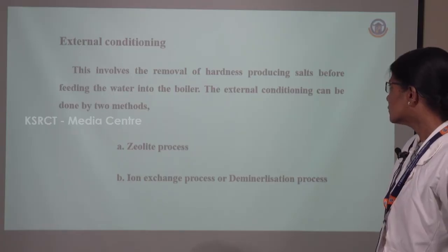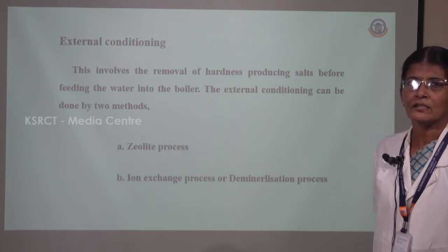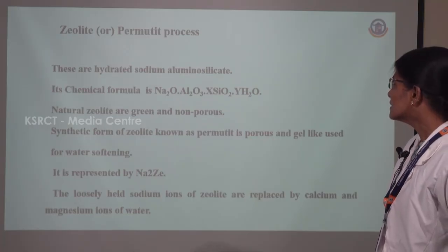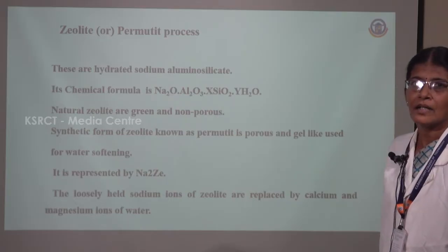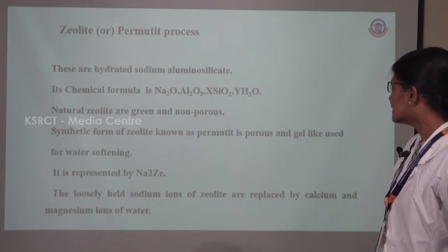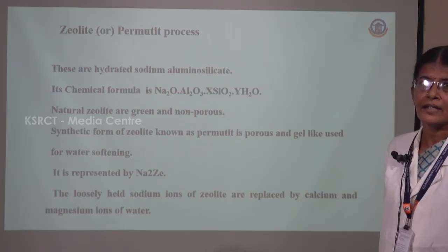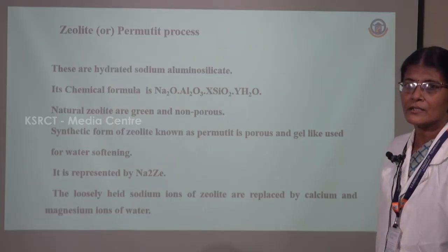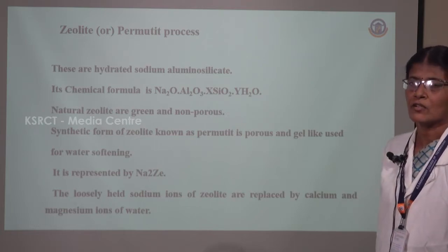External conditioning is usually done by two methods. The first method is the zeolite method. The second process is the ion exchange process, also called the demineralization process. Zeolite is hydrated sodium alumino silicate. Its chemical formula is Na₂O·Al₂O₃·xSiO₂·yH₂O. Natural zeolite is usually green in color. It is non-porous, and therefore we use the synthetic form of zeolite, known as permutite, which is porous in nature and gel-like in structure, and therefore it is used for water softening.